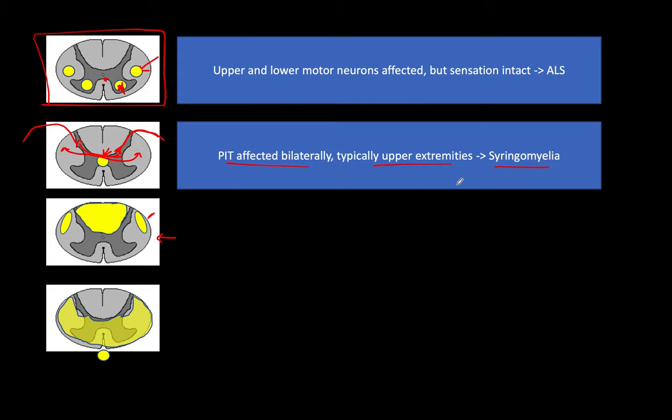That cape-like distribution makes sense because those dermatomes begin at the level of the neck — C5, C6 going all the way down the back of the arm on both sides. When you test where they have a sensory loss, that's the cape-like pattern you would see bilaterally.